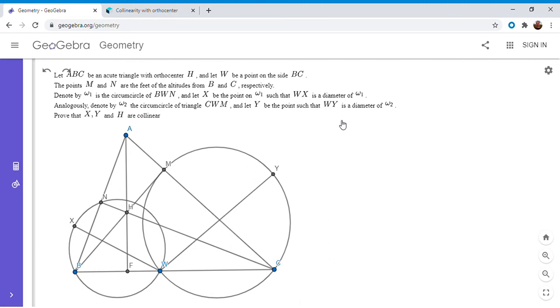Alright, now I'm going to go over the solution. We have a triangle ABC. H is the orthocenter and W is any point on the side BC. M is the foot of the perpendicular from B, N is the foot of the perpendicular from C. Then we draw the circumcircle of BNW and CMW, and we take the points X and Y such that WX and WY are the diameters of those two circles. We want to show X, Y, and H are collinear.